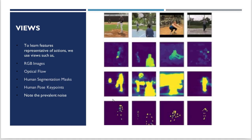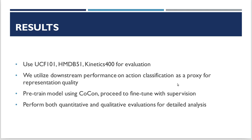Now let's look at some experiments and results. The views we use are RGB, flow, segmentation masks, and keypoints. For the last two, we use an off-the-shelf decoder which may not yield accurate results — in fact, the segmentation masks look really bad. However, we still see that we are able to learn and improve performance for all encoders involved. We use UCF, HMDB, and Kinetics for evaluation, and utilize downstream performance on action classification as a proxy for representation quality. We pre-train our model and then fine-tune it on a labeled dataset, performing both qualitative and quantitative experiments.